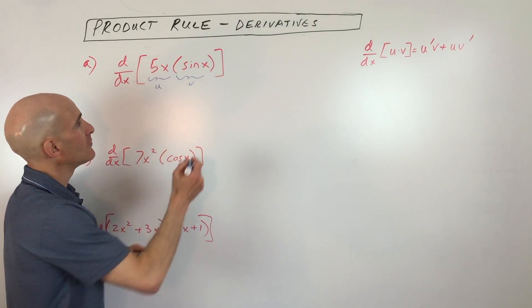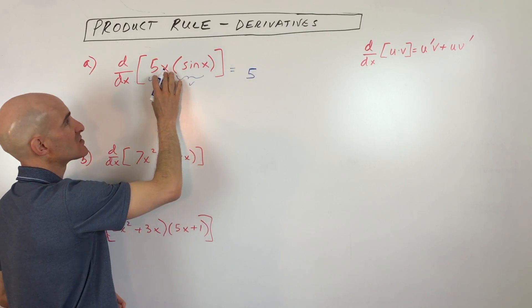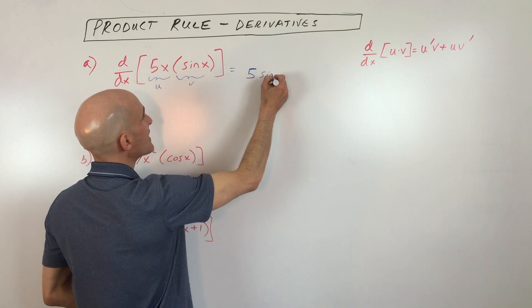So we're going to take the derivative of u, which equals 5, because the derivative of x is just 1 times 5 is 5, and we're going to leave the sine x alone.